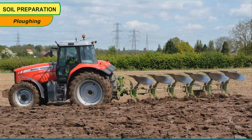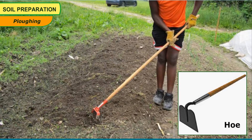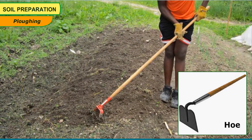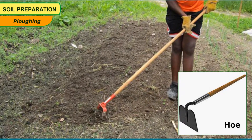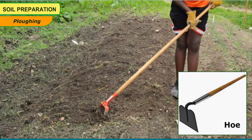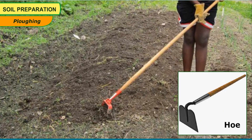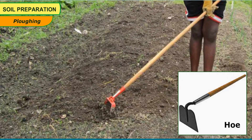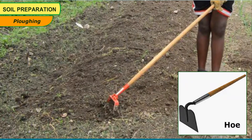These days, plowing is also done by tractors. A hoe is an ancient and versatile agricultural tool used to move small amounts of soil. It is used for weed control by agitating the surface of the soil around the plants, piling soil around the base of plants, hilling, creating narrow furrows, drills and shallow trenches for planting seeds and buds, chopping weeds, roots and crop residues, and digging and moving when harvesting root crops such as potatoes.